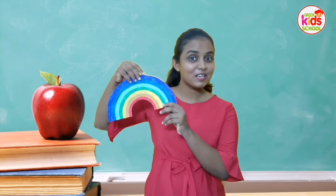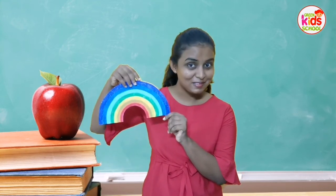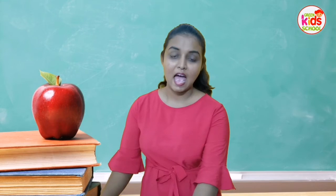R — rainbow, it's a beautiful rainbow! Very good! What else? R — rose, rose! And finally, R — ring, R ring! Okay, those are the examples. Now we are ready to do the writing activity!